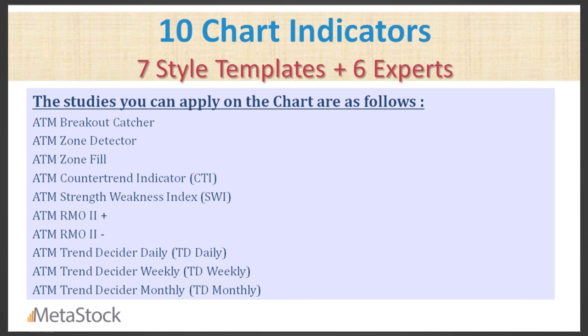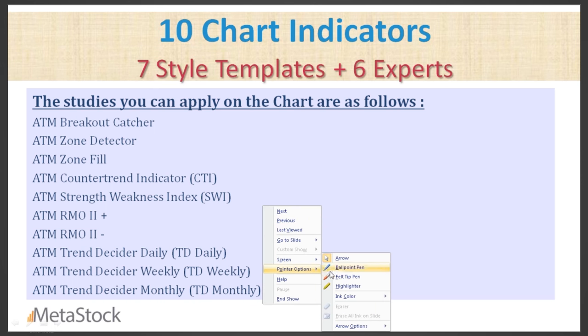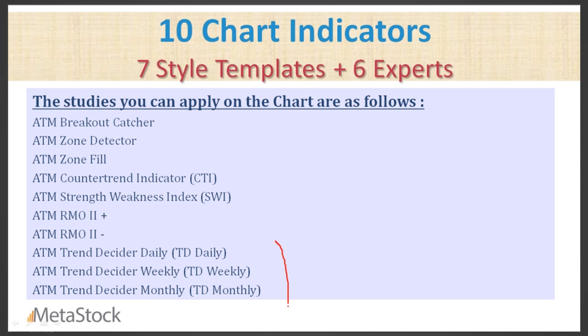Let's dive into what indicators are available with the add-on. We've got 10 different charting indicators — breakout catcher, zone detector, counter trend, and others. Today's session focuses on the new strategies. I'm going to talk about the trend decider suite, which are the bottom three indicators, the SWI or Strength Weakness Indicator, and a new template called the ATM RMO — also known as the superfilter method.